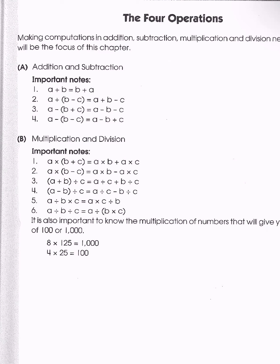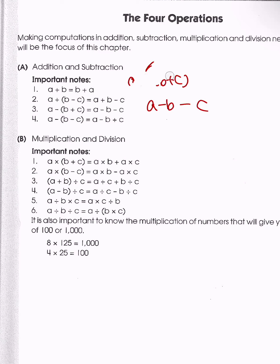But what happens when there's a negative sign in front of the parentheses? If we have A minus (B plus C), whenever we have a negative sign in front of the parentheses we distribute the negative sign. So that makes this become A minus B minus C. And when we have a negative sign in front of the parentheses but then a negative sign inside the parentheses,